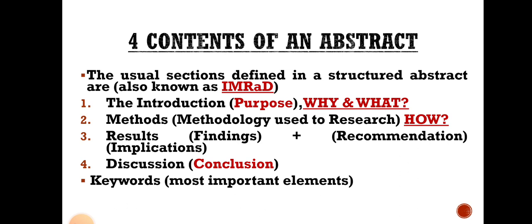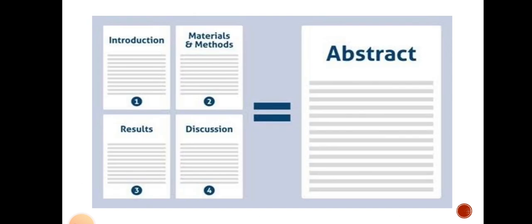So these are the four contents of an abstract. In image form: number one is Introduction, number two is Materials and Methods, number three is Results, and number four is Discussion. This is the complete structure — abstract is made up of these four items.